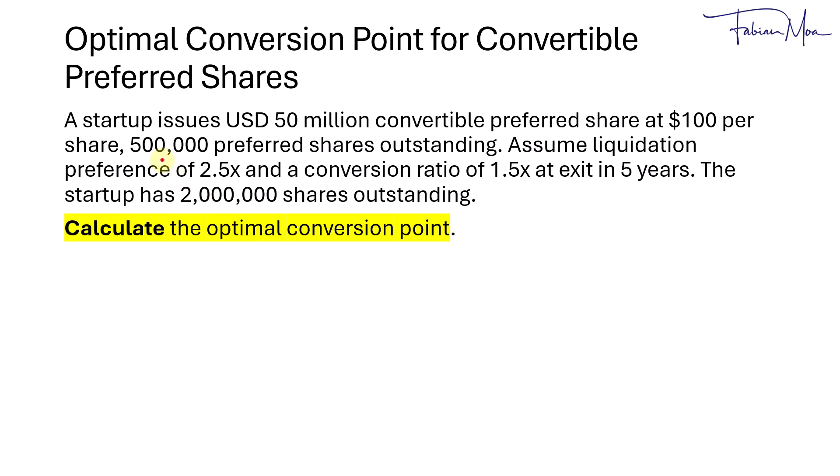In this scenario we have a startup that issues $50 million of convertible preferred shares at $100 per share, and there are 500,000 preferred shares outstanding. Assume a liquidation preference of 2.5 times and a conversion ratio of 1.5 times at exit in 5 years. The startup has 2 million common shares outstanding.